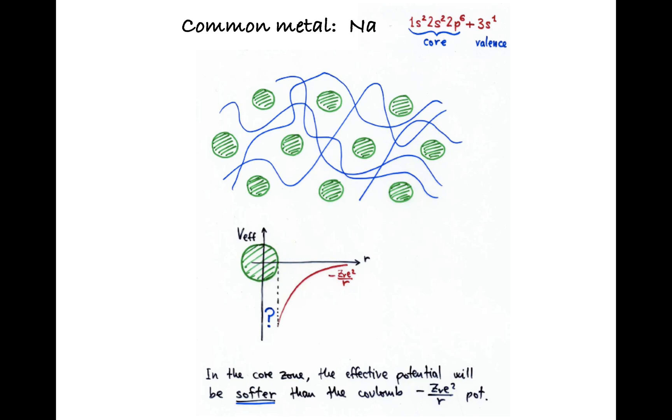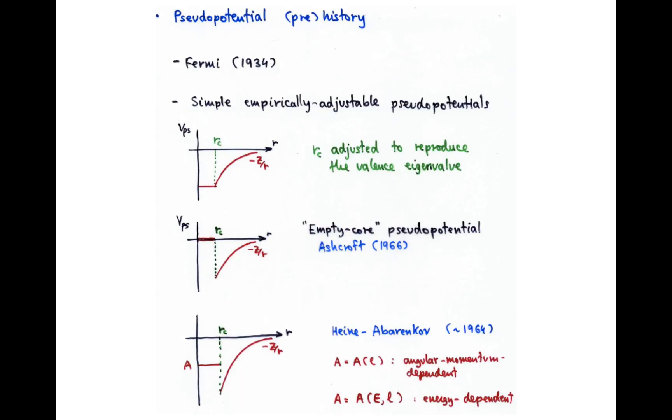The first thing to notice is that for most systems, you're going to have a lot of savings, just by forgetting about the core electrons. In particular, for sodium, out of the 11 electrons in the atom, you can forget about 10. And you describe this valence electron, the 3s, as flying through the crystal, feeling some kind of effective potential. What kind of effective potential? Well, you don't know in principle, but you can model it.